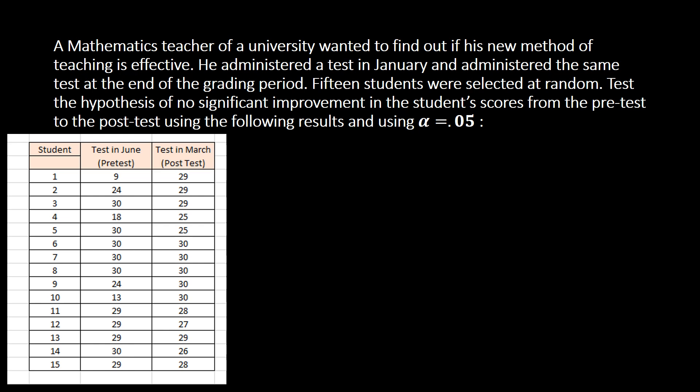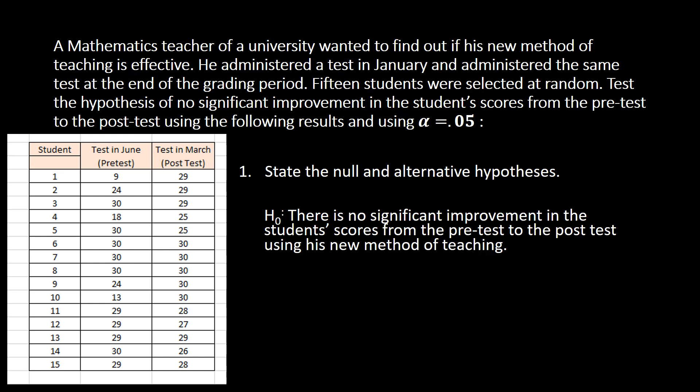Using a level of significance at 0.05, first we are going to consider writing our null and alternative hypothesis. Based on our problem, it says we are to test the hypothesis of no significant improvement. This no significant improvement is our null hypothesis because when you say hypothesis, this will always be the statement of no significance. So under null hypothesis, there is no significant improvement in the students' scores from the pre-test to the post-test using his new method of teaching. In symbol, we are going to compare the two means and that should be equal to the other mean.